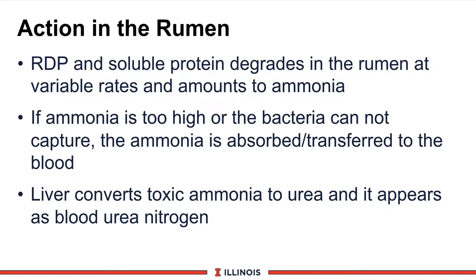To understand milk urea nitrogen, let us trace through how it is formed and where it comes from. Starting in the rumen, when we feed nitrogen — which many of us would call protein — the rumen degradable protein and soluble protein fractions degrade in the rumen at various rates and amounts to ammonia.